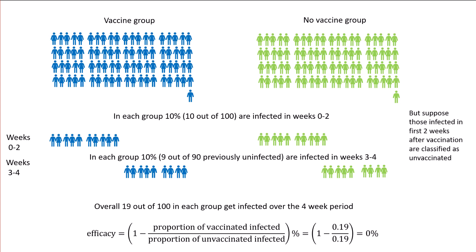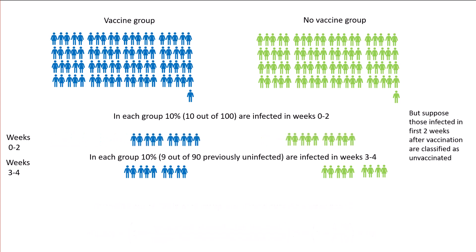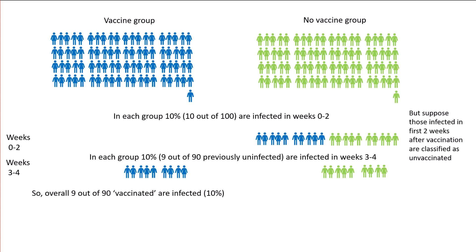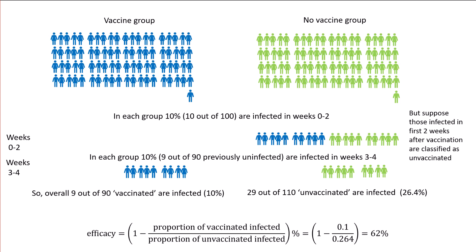But suppose those infected in the first two weeks after vaccination are classified as unvaccinated. We move those 10 people from the vaccine group who were infected in the first two weeks and classify them as unvaccinated. Now, 9 out of 90 are considered vaccinated and infected — that's 10%. But now 29 out of 110 classified as unvaccinated are infected — that's 26.4%. So the efficacy now is 62%.